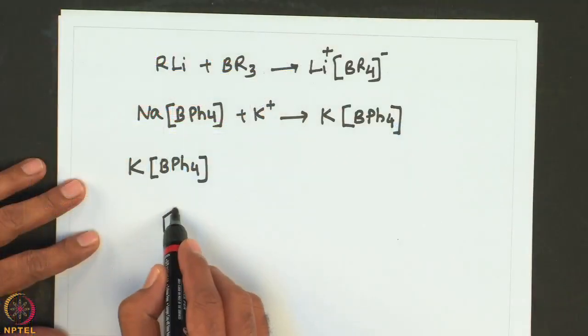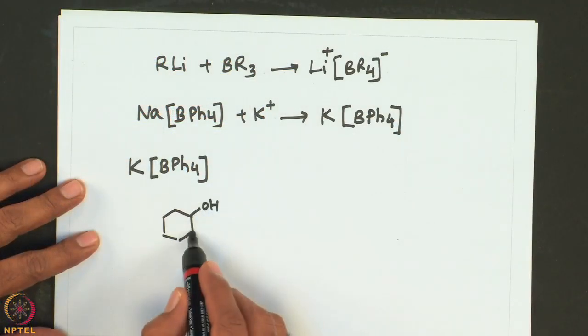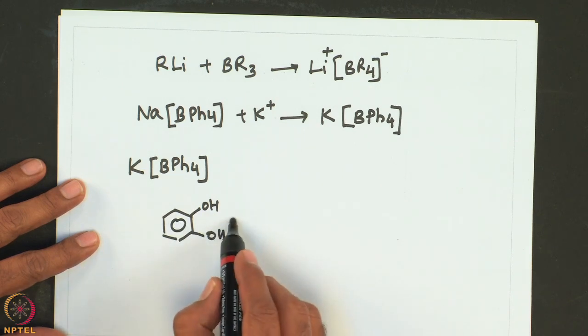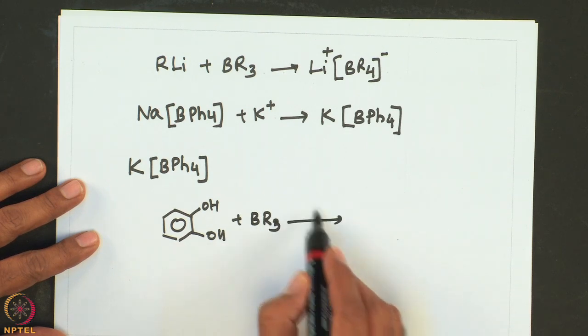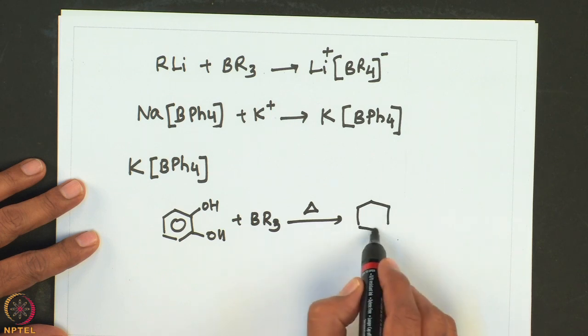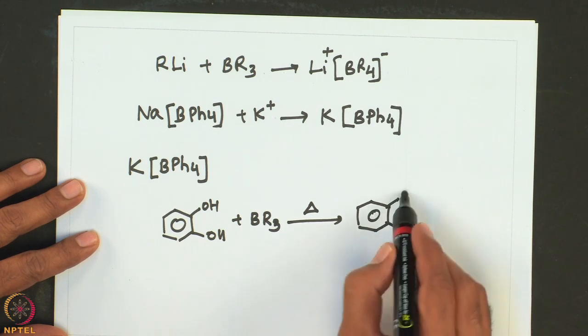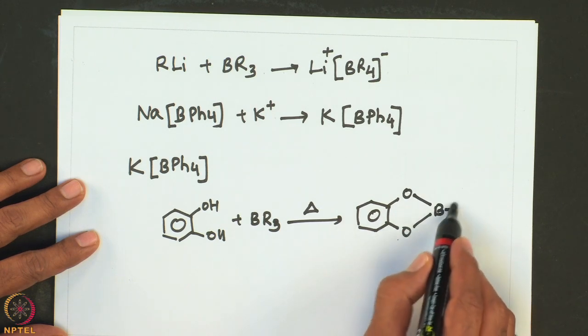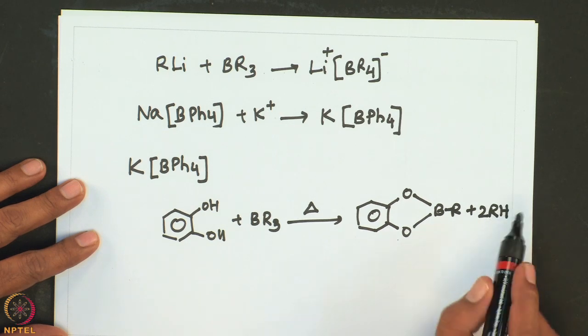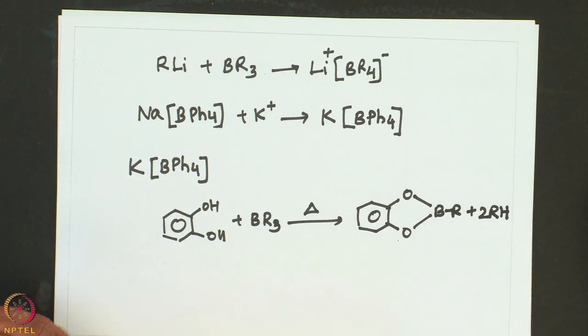These Lewis acidic organoboron compounds, such as trialkyl aryl boron, can also react with catechol to give this kind of compound. Organohalogen boron compounds are more reactive than simple trialkyl boron compounds.